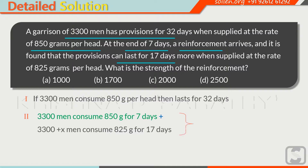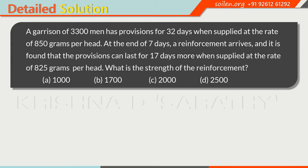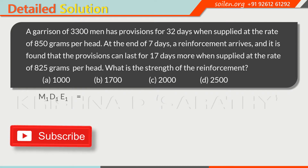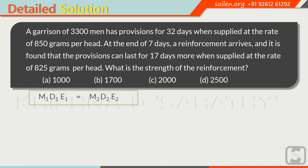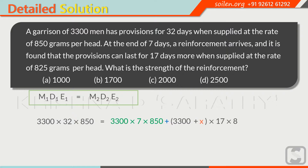In the second case we have the sum of two parts. We can apply the formula M1 × D1 × E1 = M2 × D2 × E2. Here M1 = 3300, D1 = 32, E1 = 850. Placing the values: 3300 × 32 × 850 = 3300 × 7 × 850 + (3300 + X) × 17 × 825. Next, transfer the first term on the right to the left side.